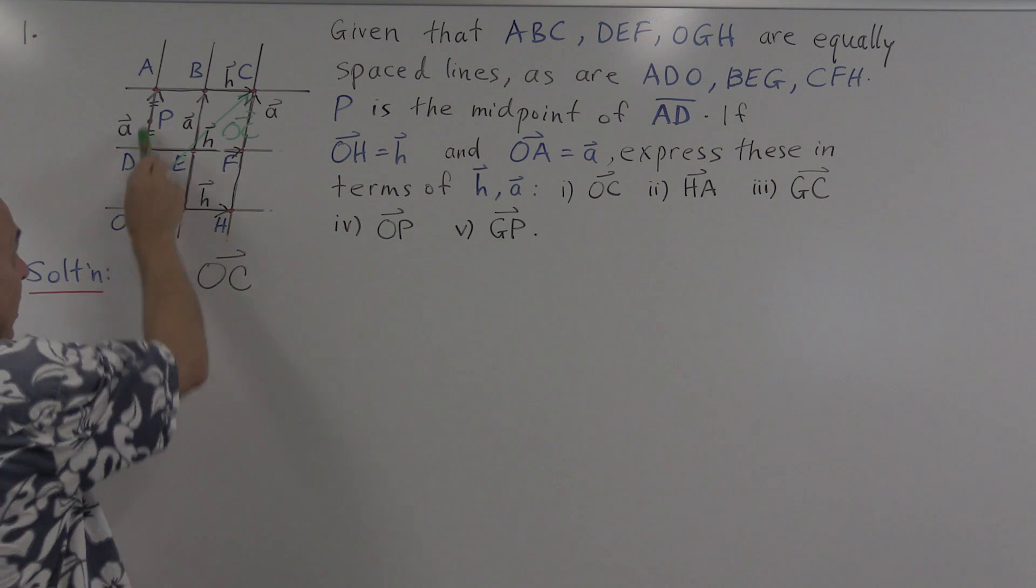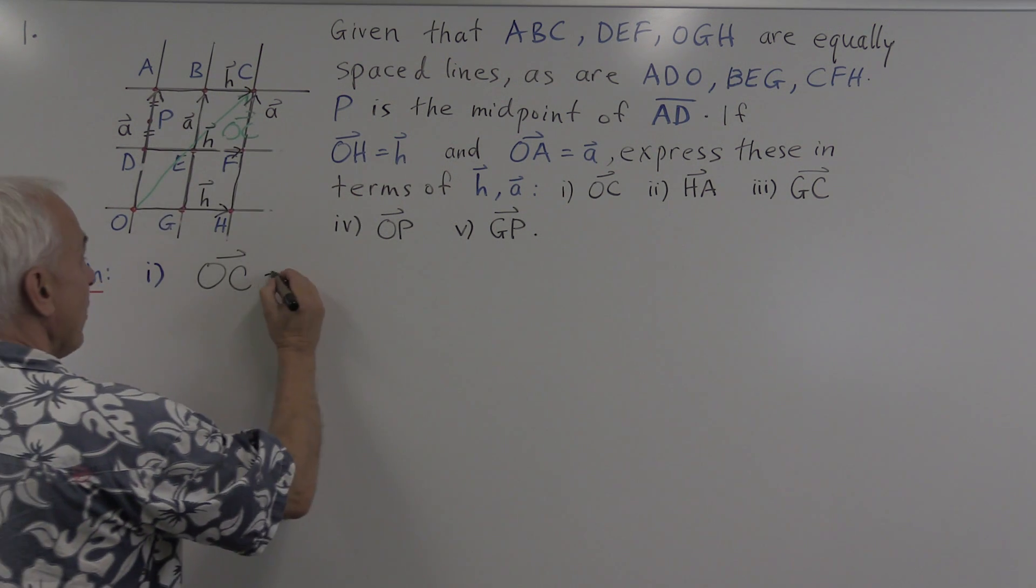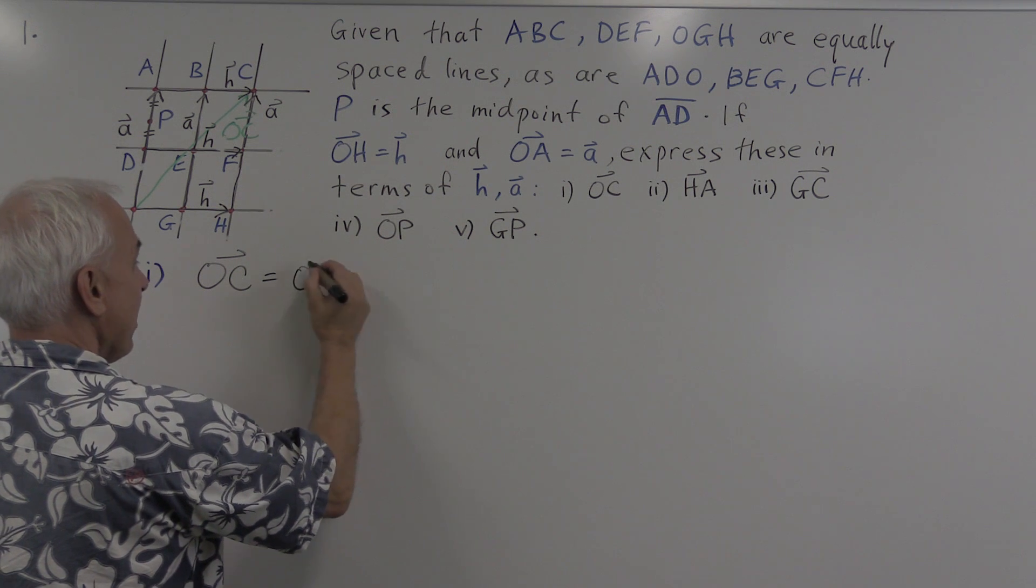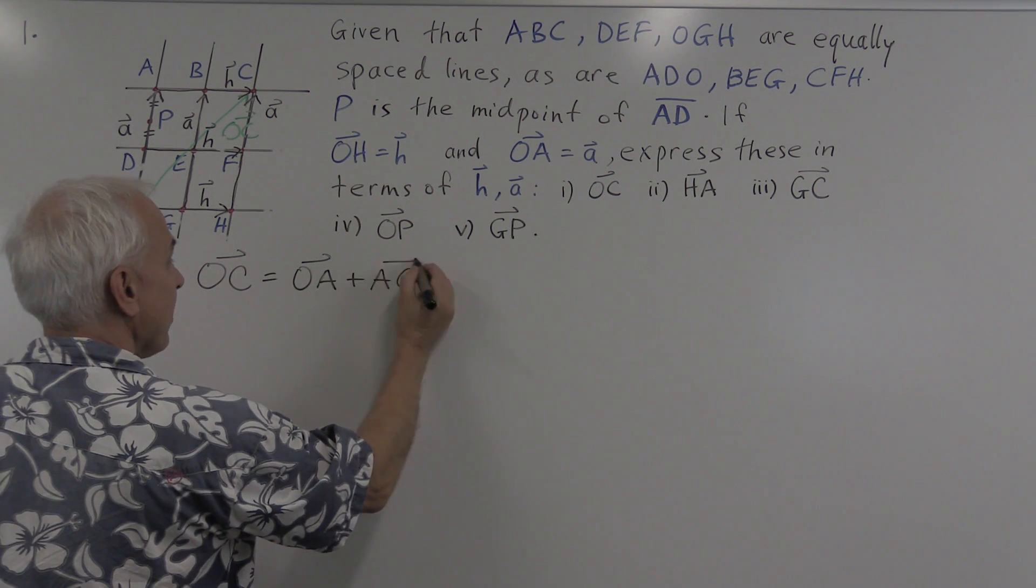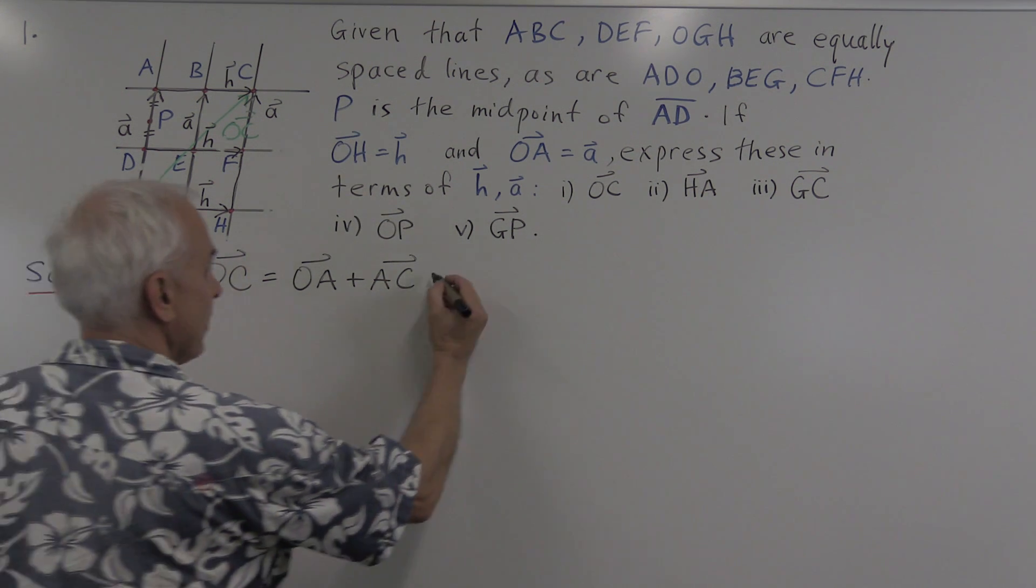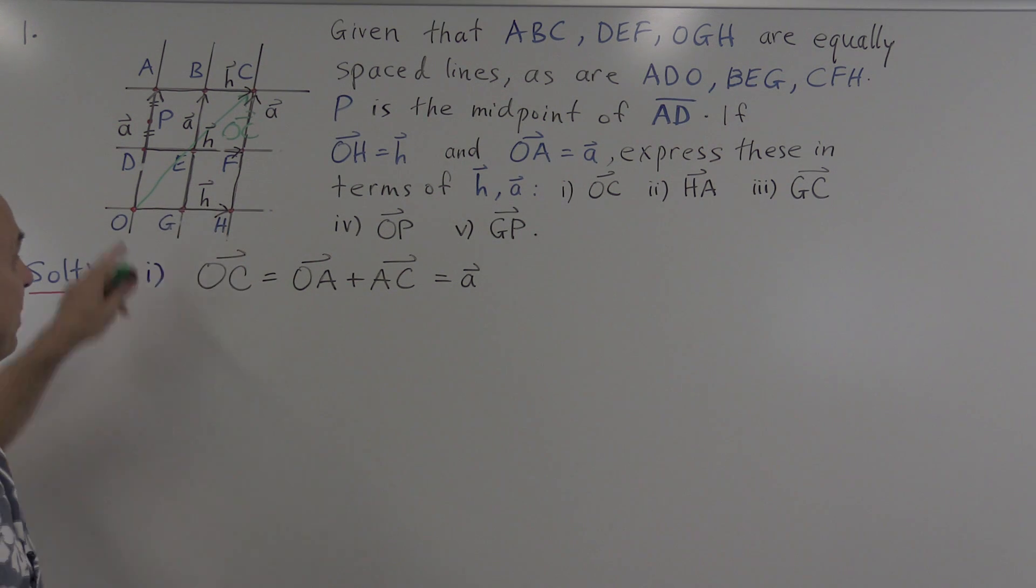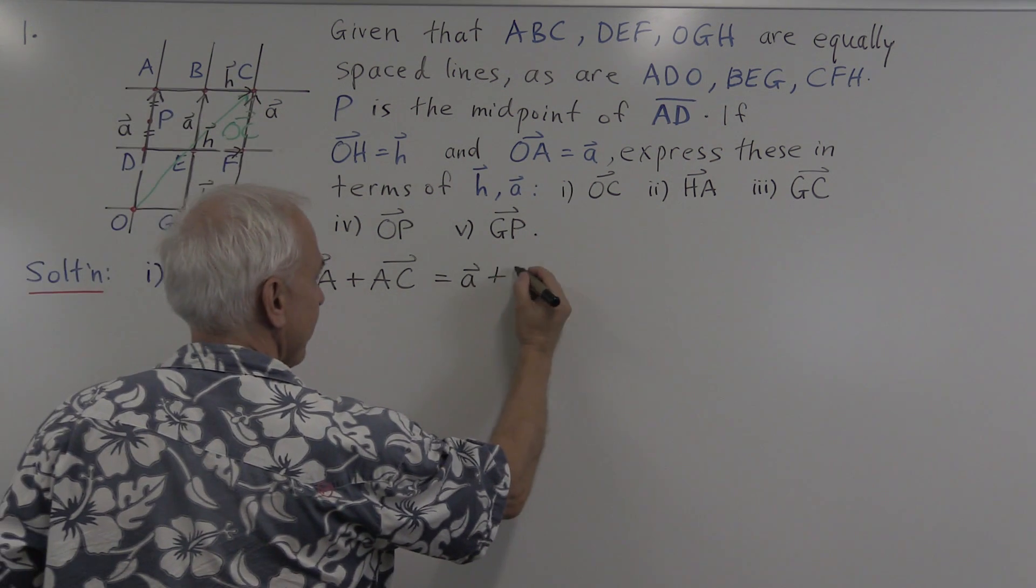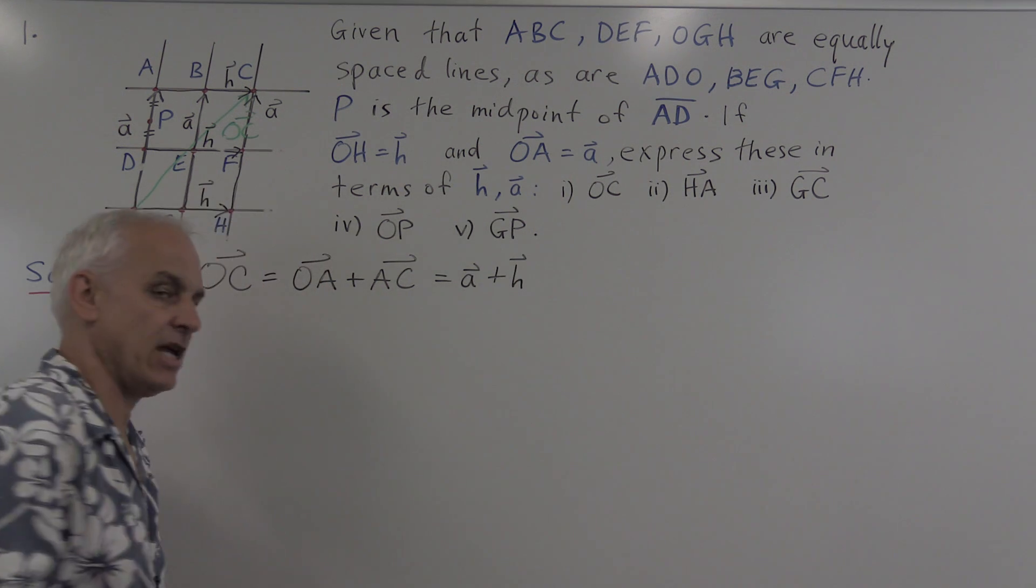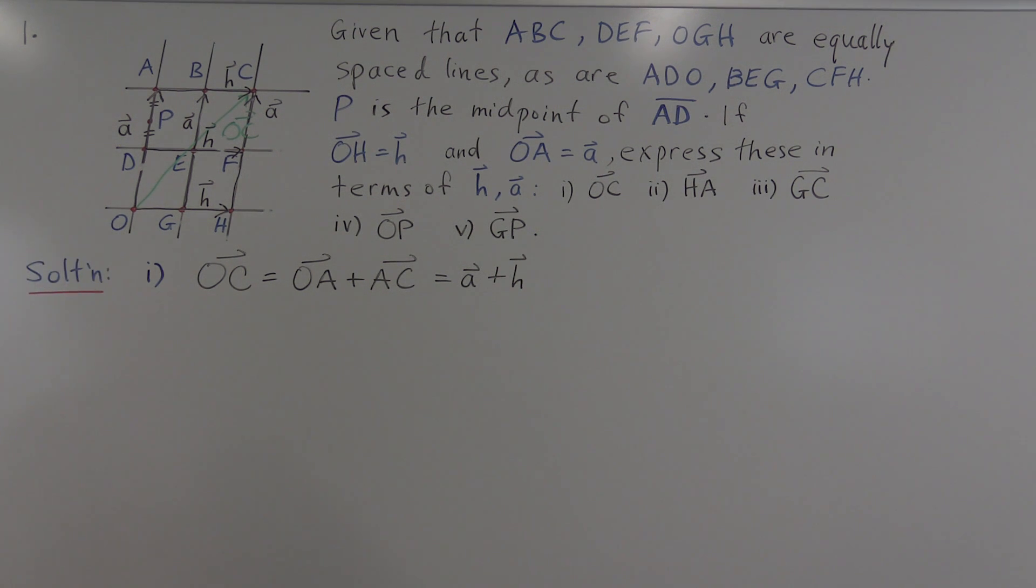Now if we want the vector OC, we ask ourselves, how do we get from O to C? Well, one way is to go up here along the vector a, and then from here to here. So we can write it as OA plus AC. But OA, we've said is equal to the vector little a. And AC is the same as the vector h, because this is a parallelogram. So AC is the same as h. And we've expressed OC as a linear combination of a and h.